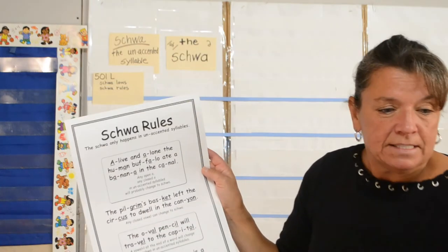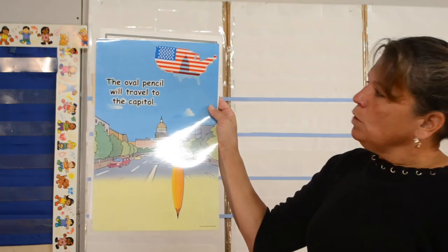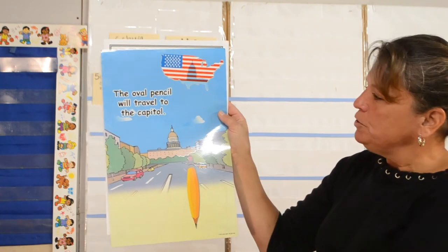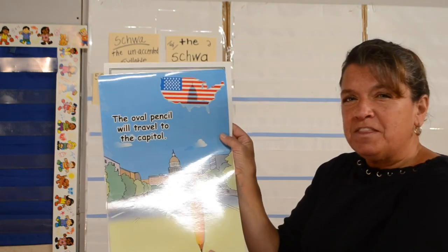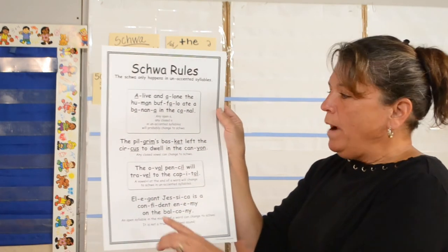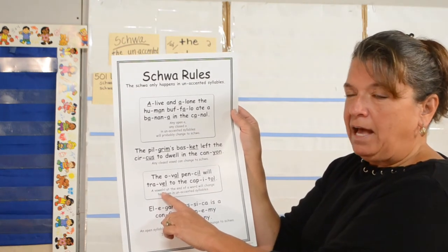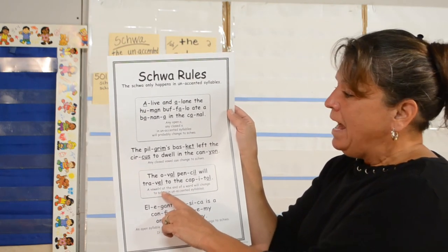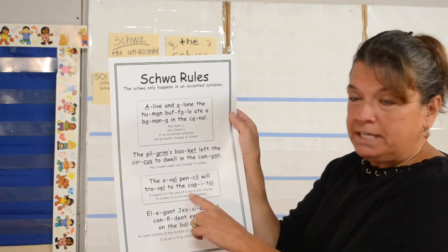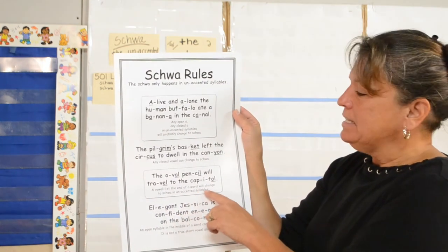Third sentence: 'The oval pencil will travel to the capital.' The purpose of this sentence in understanding schwa is to be aware that a vowel plus L — A-L, E-L, I-L, O-L, U-L — at the end of a multi-syllable word will change to schwa in unaccented syllables.